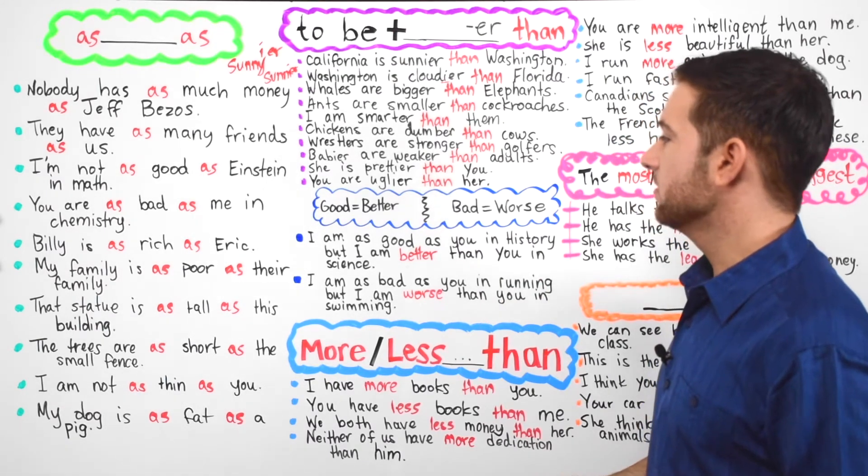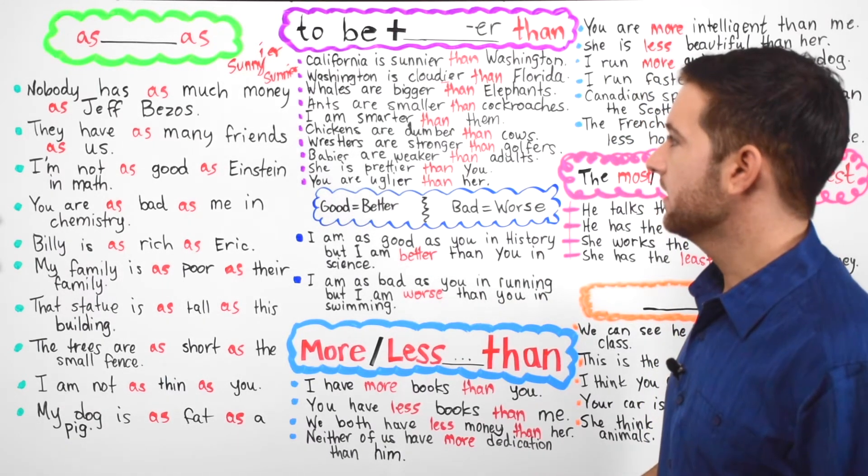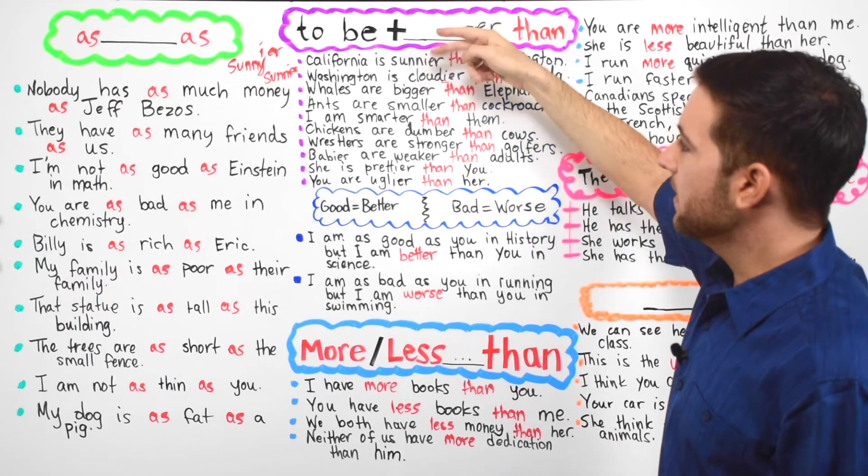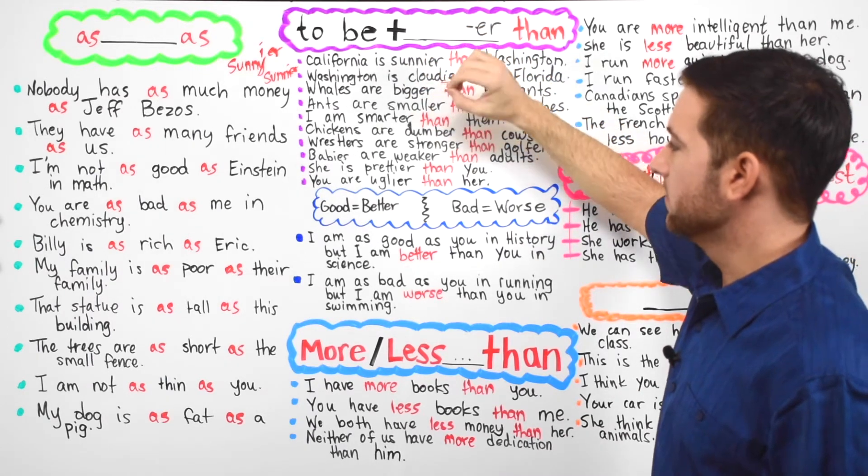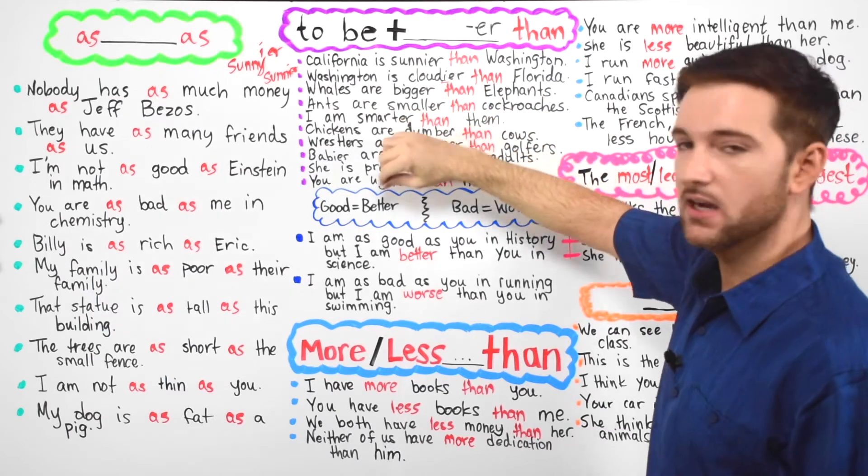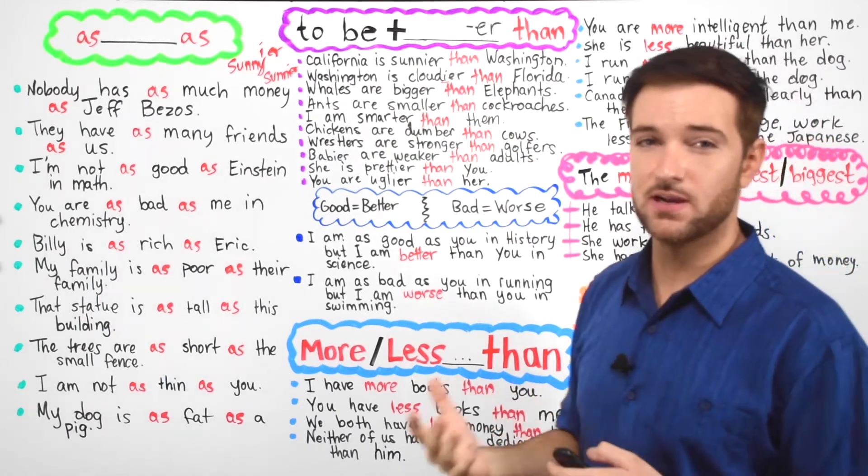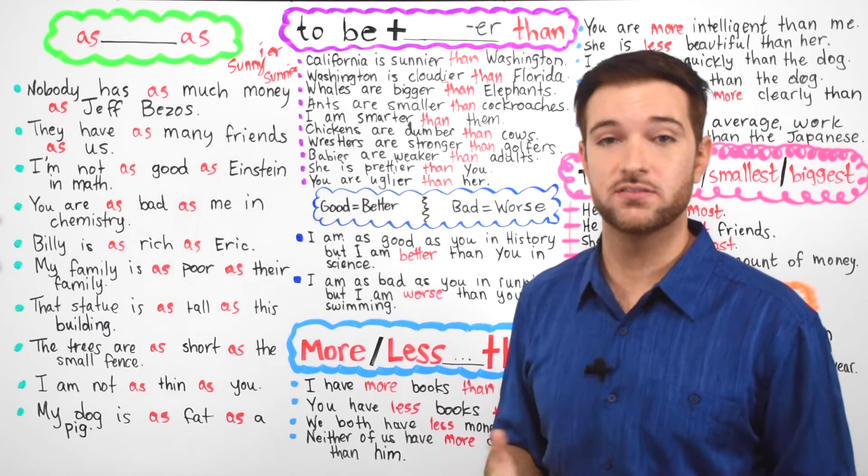She is prettier than you. You are uglier than her. So notice here that we also have like big, small, smart, dumb, strong, weak, pretty, ugly. So you see those comparison words that we're talking about in this lesson.